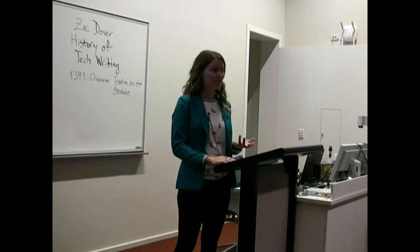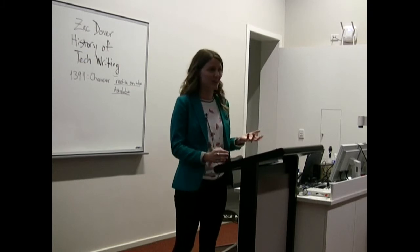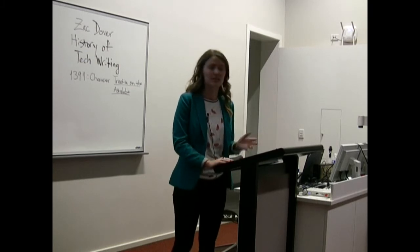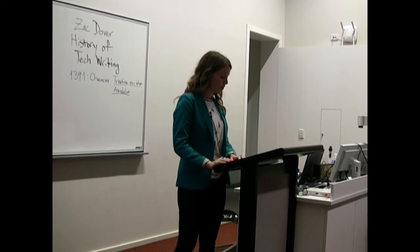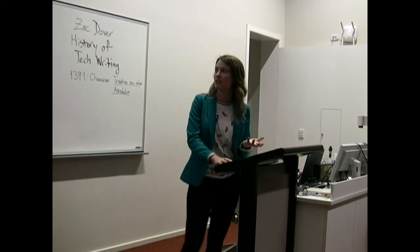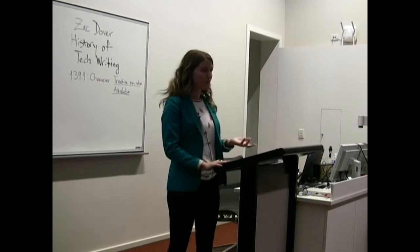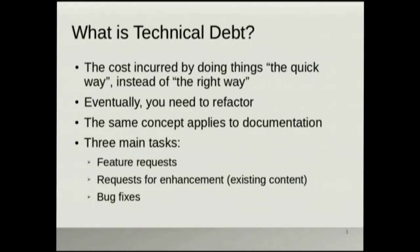In documentation, every time you publish something that is not quite right — vague, inaccurate — you're incurring debt in the same way. It's similar to engineering. We see three main tasks: feature requests as new stuff, requests for enhancements to make existing things better, and bug fixes. The way you find out if you have a lot of technical debt is that your bug fixes crowd out your feature requests, or you just have lots of bugs.